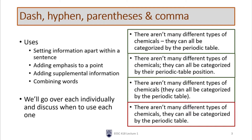Sentence number two: 'There aren't many different types of chemicals; they can all be categorized by their periodic table position.' This sentence pretty much says the same thing. The difference is that I've used a semicolon to join the two independent clauses. In this case, there is also a hyphen. What you notice about the hyphen is that it is combining two words, whereas the dash is punctuating the whole sentence.